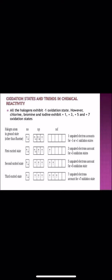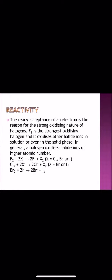When we talk about the oxidation state, all the halogens exhibit minus 1 oxidation state. However, chlorine, bromine and iodine exhibit plus 1, plus 3, plus 5 and plus 7 oxidation states also.